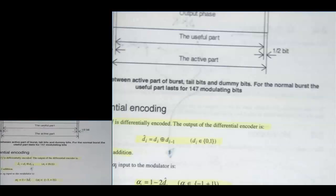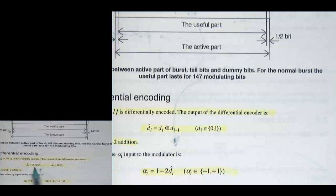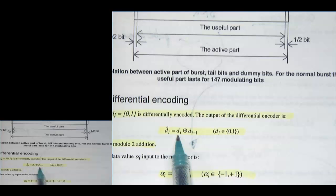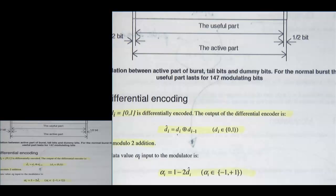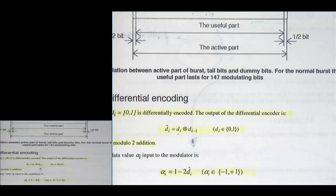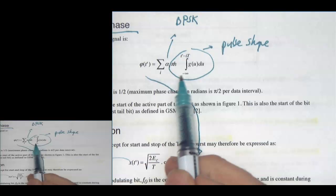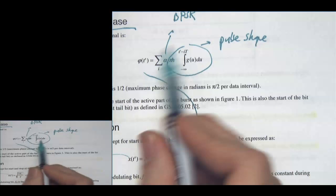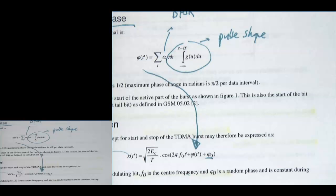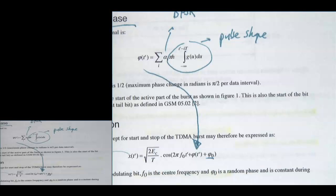The bits prior to encoding are differentially encoded: the current bit and the previous bit are added together in binary, and that result is converted to BPSK. To summarize: data comes in, it's differentially encoded with tail bits initialized at 0, converted to BPSK, and passed into a phase modulator that does a linear combination of the symbols with the integral of the pulse shape to produce the phase function. This is an example of a nonlinear modulation technique.